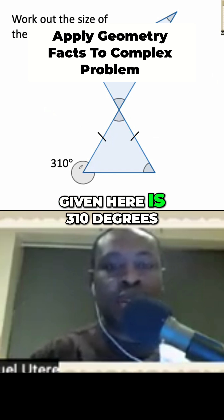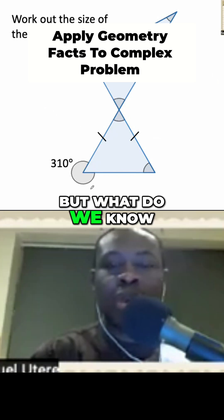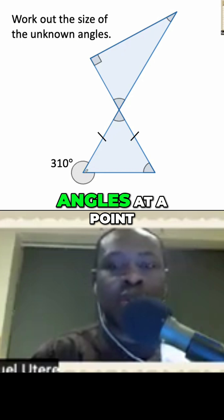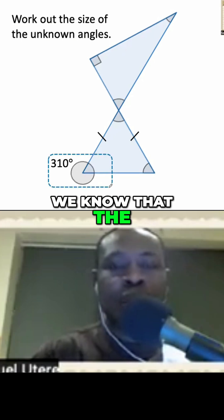The only number we're given here is 310 degrees. But what do we know about the sum of angles at a point? We know that the missing angle, when we include it to the angle that we know, will give us a full turn.